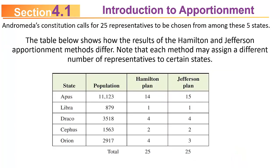This table shows the two plans and their apportionment. Notice the Hamilton plan is better for Orion, which gets 4 instead of 3, while the Jefferson plan is better for Apis, which gets 15 instead of 14. But both plans apportion all 25 seats based on their respective principles.